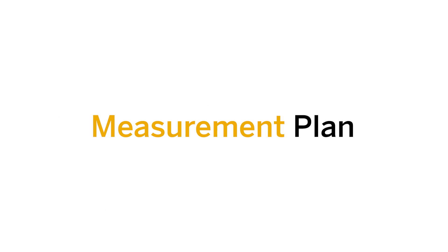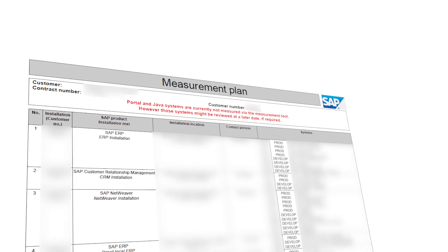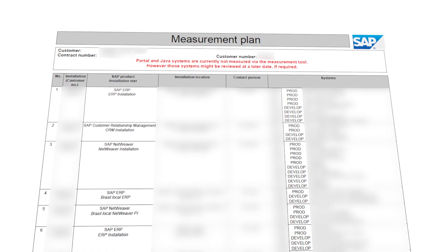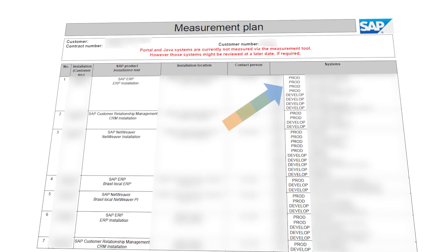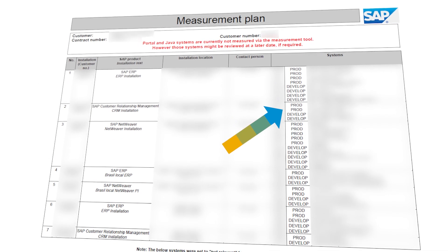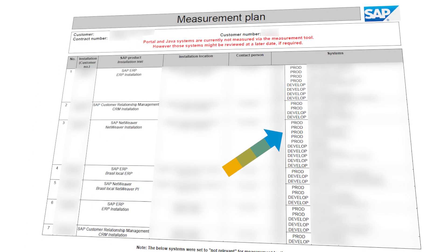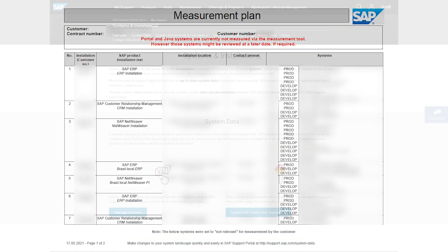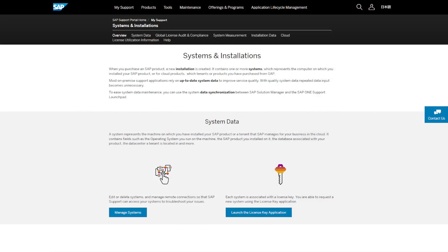The measurement plan contains all your relevant systems which are in scope for the measurement. Only ABAP productive and development systems will be considered. To edit these entries, you can access the system management by clicking the link provided in the document, or by accessing the system measurement preparation area, also linked in the auditor's email.